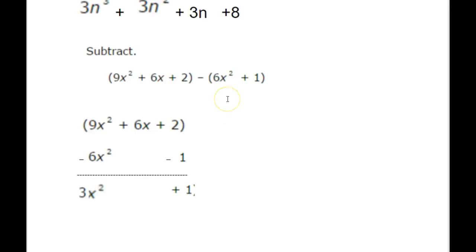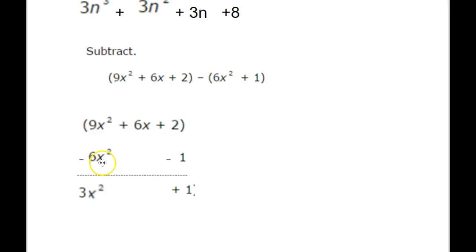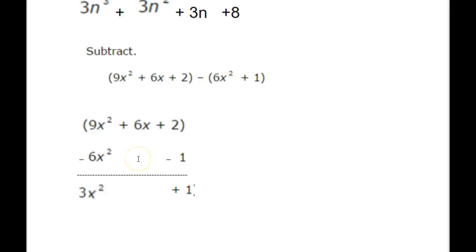Subtraction problems are a bit more tricky. In addition to aligning the expressions, you need to be careful to distribute the negative sign. For example, if I have minus (6x squared plus 1), I need to multiply the negative sign times 6x squared and then times 1, giving me negative 6x squared and negative 1. Since I've distributed the subtraction sign as a negative, I can now just add everything together. Line up the x squared terms and the constant terms.